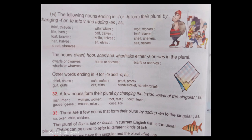There are a few nouns that form their plural by adding EN to the singular, as: ox, oxen; child, children. The plural of fish is fish or fishes. In current English, fish is the usual plural. Fishes can be used to refer to different kinds of fish.